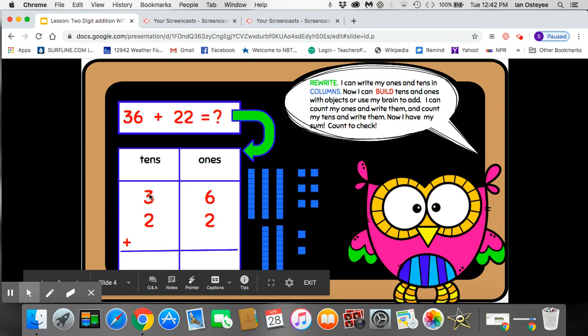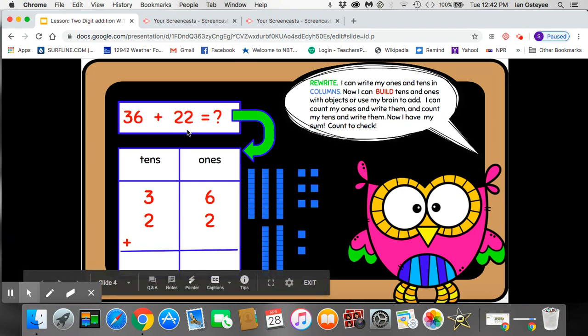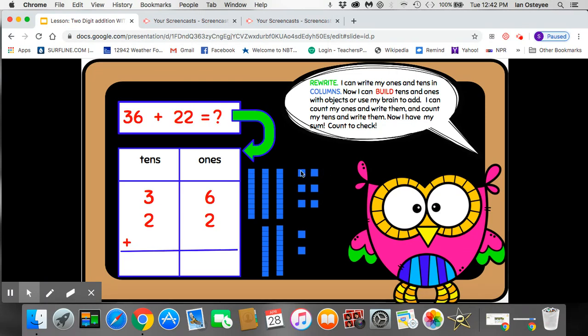So I've rewritten three tens in the tens place and six ones in the ones place. I've put two tens over here in the tens place and two ones over here. Now I've gotten my objects all organized. I need to count my ones first.